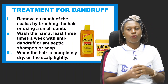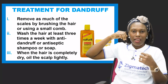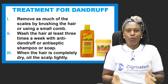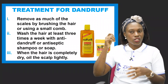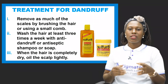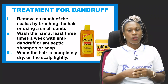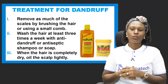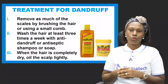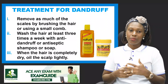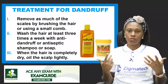To treat dandruff, you can remove scales by brushing and combing vigorously. Also, wash your hair at least two or three times a week with anti-dandruff or antiseptic shampoo or soap. When the hair is completely dry, apply oil to the hair — sometimes dandruff appears when the hair is too dry, so oiling helps treat it.